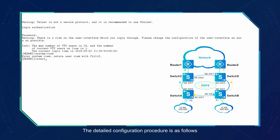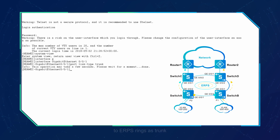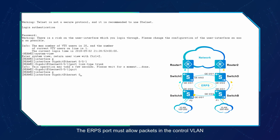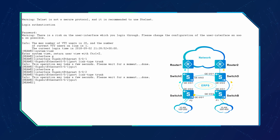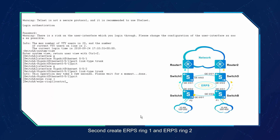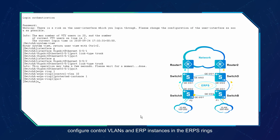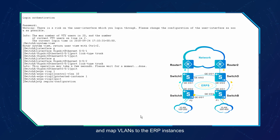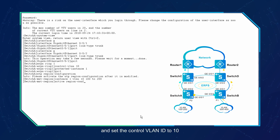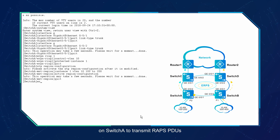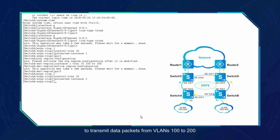The detailed configuration procedure is as follows. First, configure the link type of all ports to be added to ERPS rings as trunk. The ERPS port must allow packets in the control VLAN and data VLAN; therefore, the port must be configured as a trunk or hybrid port. Second, create ERPS ring 1 and ERPS ring 2 on all switches on the ring network. Configure control VLANs and ERP instances in the ERPS rings and map VLANs to the ERP instances. For example, configure ERPS ring 1 and set the control VLAN ID to 10 on switch A to transmit RAPS PDUs. Then create ERP instance 1 in ERPS ring 1 to transmit data packets from VLANs 100 to 200.